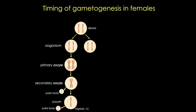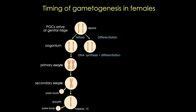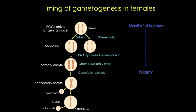Let's review the timing of oogenesis. Those diploid primordial germ cells will arrive at the genital ridge and differentiate into oogonia. They're going to replicate their DNA, enter meiosis I, and arrest as primary oocytes. Importantly, this all happens in the first five months of development. Starting at puberty, a set of follicles will resume development and usually one will mature into a secondary oocyte that will complete meiosis I and arrest in meiosis II and eventually ovulate. Upon fertilization, meiosis II will complete, so it's a haploid gamete that's completed meiosis II.